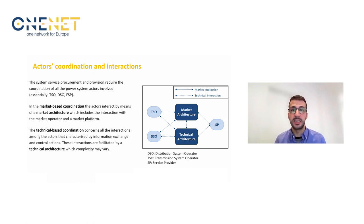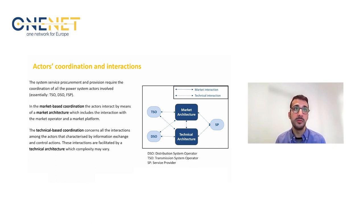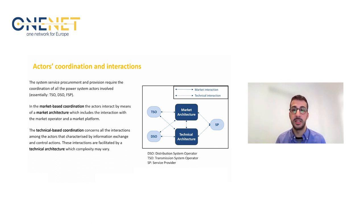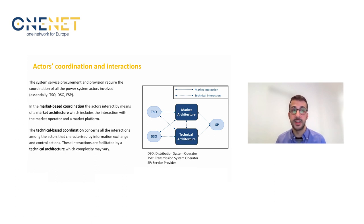To design harmonized market models, it is necessary to understand the elementary interactions that may exist among market participants when procuring services. Since service procurement essentially entails three actors — the TSO (transmission system operator), the DSO (distribution system operator), and the service providers — this interaction can be based on two main types of coordination: market-based coordination, in which the actors interact by means of a market architecture exchanging products related to system services, and technical-based coordination, which entails the technical architecture for information exchange and control actions that facilitates the exchange of products and the activation of system services.